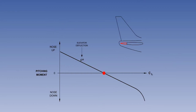A stable aeroplane will resist displacement from equilibrium. The control surface displacement and control forces should reflect the stability of the aeroplane and provide suitable reference to the pilot for precise control. The effect of elevator deflection on pitching moment is illustrated: with the elevator neutral and the aircraft flying level at a given lift coefficient, a momentary increase in angle of attack generates a stabilising nose-down pitching moment.